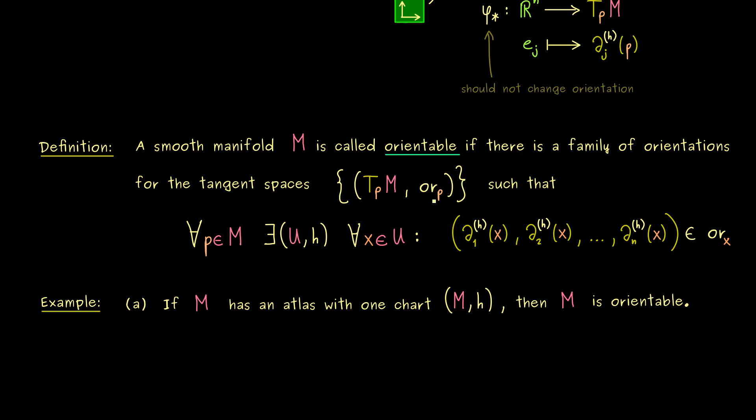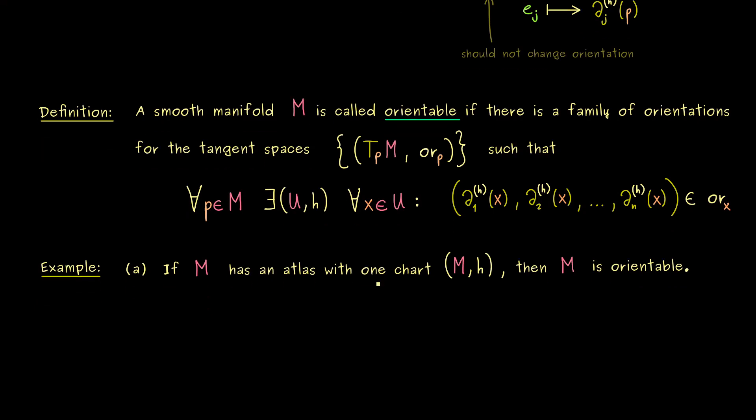It also means you could flip the orientations. So for example, for a two-dimensional manifold as before, it means that you could distinguish the sides of the manifold. What this exactly means we will discuss in further videos.